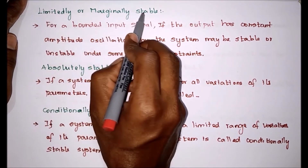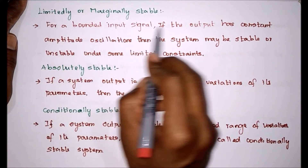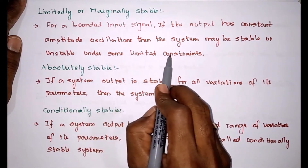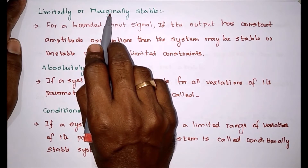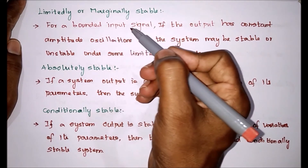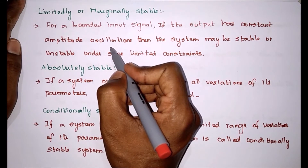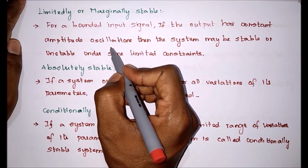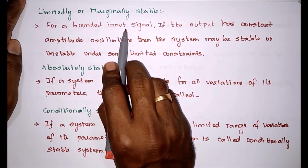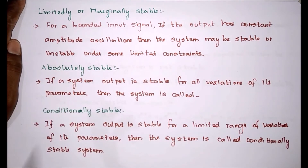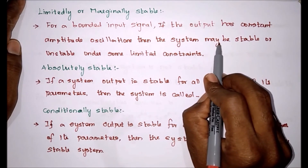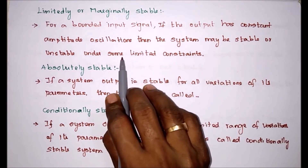The next one is limitedly or marginally stable. For a bounded input signal, if the output has constant amplitude oscillation, then the system may be stable or unstable under some limited constraints. Limitedly or marginally stable means it may be stable or unstable for a particular duration. For one duration it may be stable, for another it may be unstable. So we cannot surely say it is stable or unstable, but we say limitedly or marginally stable.